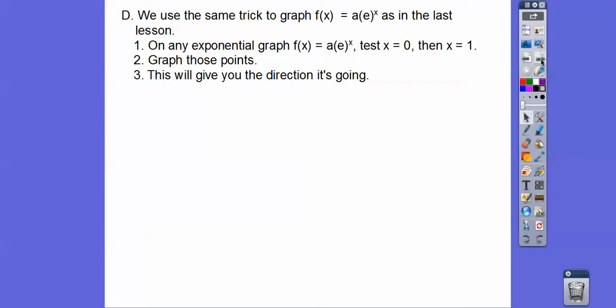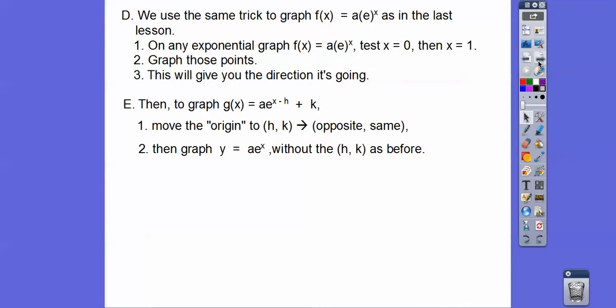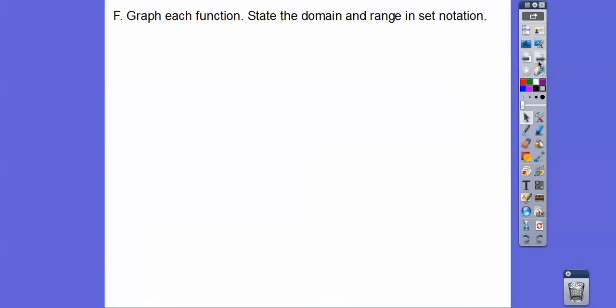And it asymptotically goes towards the x-axis unless we got the HK. So the HK, it'll asymptotically go to the K part right there. So we move the origin to HK, which is opposite, same, and then graph the parent graph right there without HK, just like we did before.